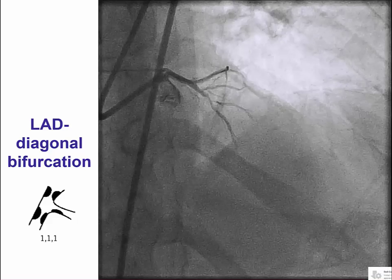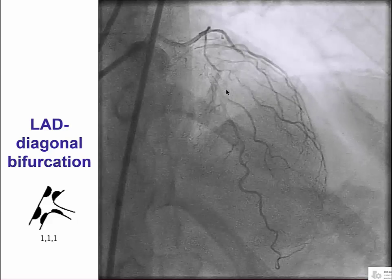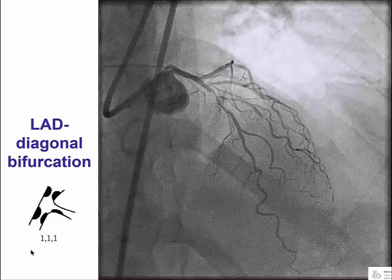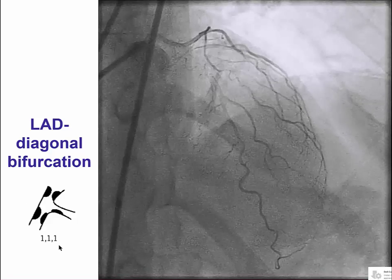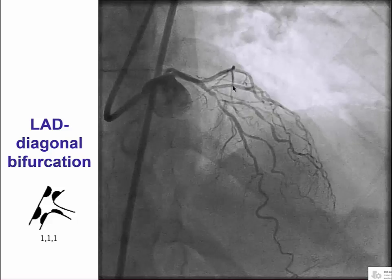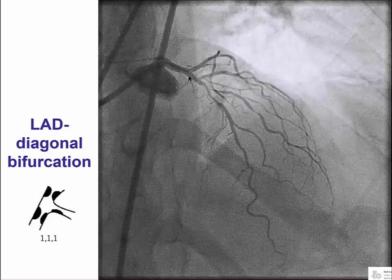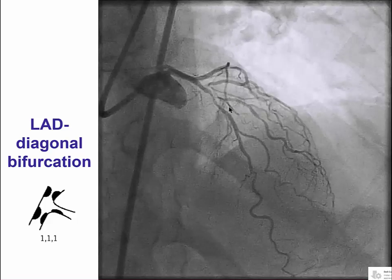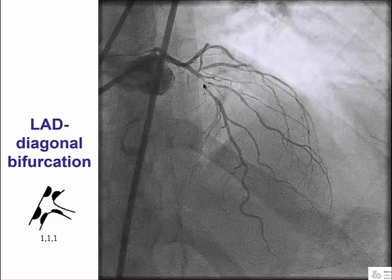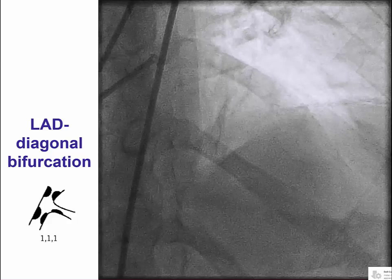This is a patient who has an LAD diagonal bifurcation. This is a Medina 1-1-1 bifurcation lesion because there is disease both proximal to the side branch as well as distal to the side branch in the main vessel, which is the LAD in this particular case, and also there is disease in the ostium of the side branch.